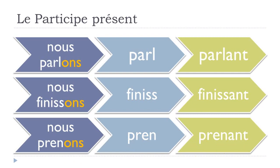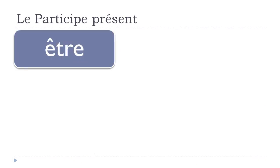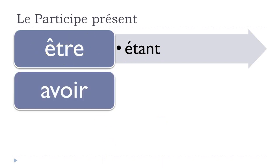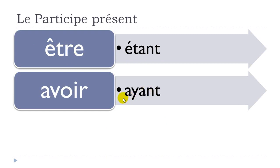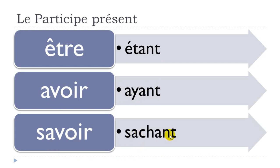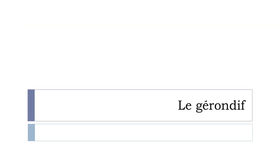Le gérondif — a dedicated video. We saw it briefly in the previous lesson on le participe présent. To construct the gérondif: first use la préposition 'en', then add the participe présent form. This expresses two simultaneous actions.